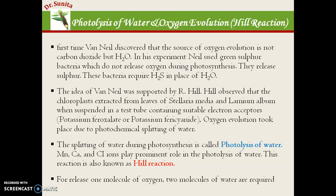This proved that the photochemical splitting of water leads to oxygen evolution. This splitting of water during photosynthesis is called photolysis of water — 'photo' means light, 'lysis' means breakdown, so water breakdown by light is photolysis of water. Three minerals — manganese, calcium, and chloride — play a prominent role in photolysis of water. Since this reaction was identified by Robert Hill, it is also named the Hill reaction.